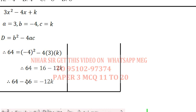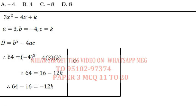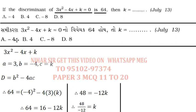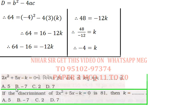64 minus 16 equals minus 12k. 48 equals minus 12k. Divide by minus 12, that's minus 4. So my answer is minus 4. That's the value of k.